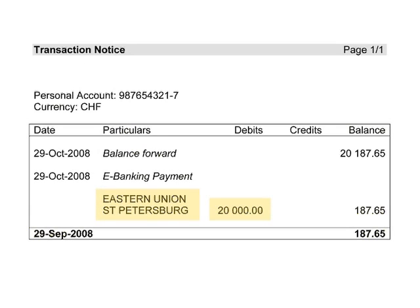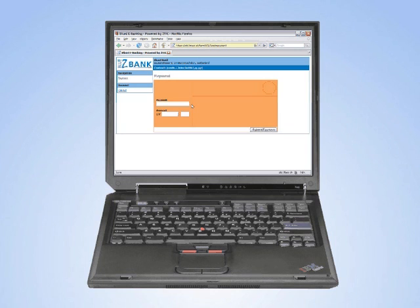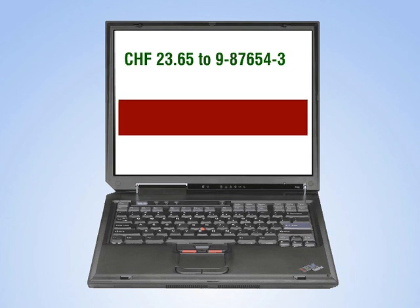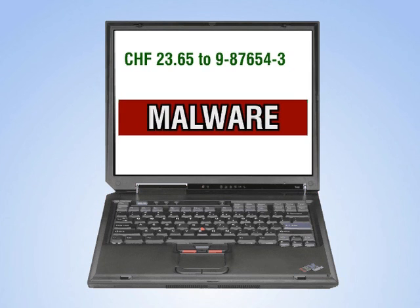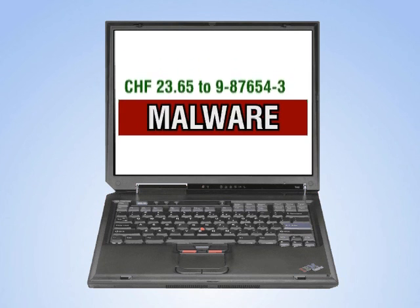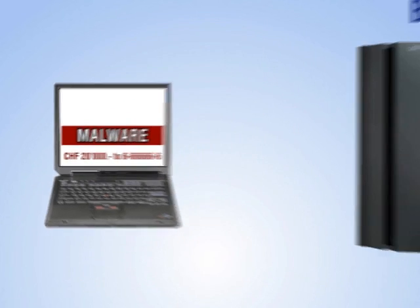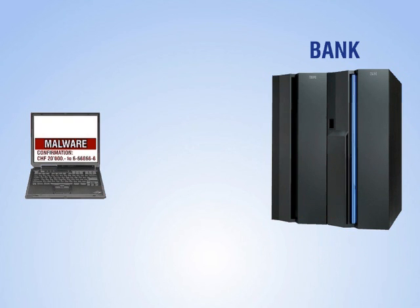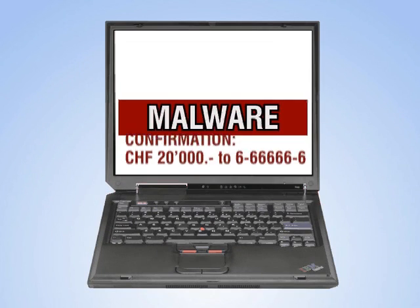So what has happened? When John entered the payment details on his home computer, an invisible, malicious computer program — so-called malware — changed the payment details before they were sent to the bank's server. The malware even changed the bank's confirmation text to the transaction information that John was expecting.